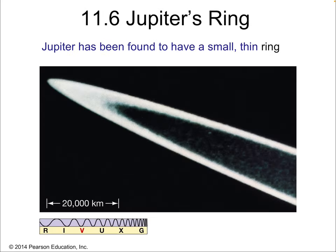Jupiter has a ring — in fact all Jovian worlds do. Jupiter's ring is probably the weakest: it's small and dark, reflecting virtually no light in the visible spectrum, and can only really be seen in the infrared. Over time, smaller and darker particles have overlaid the ring, decreasing its reflectivity.